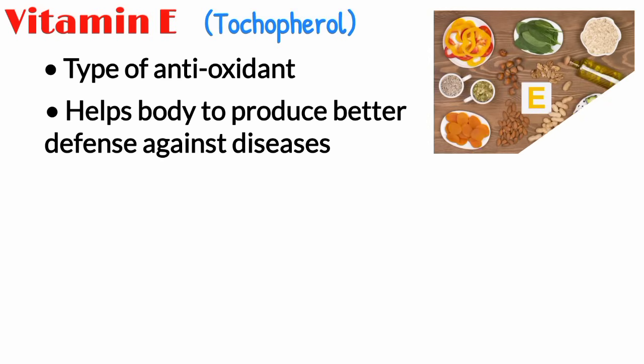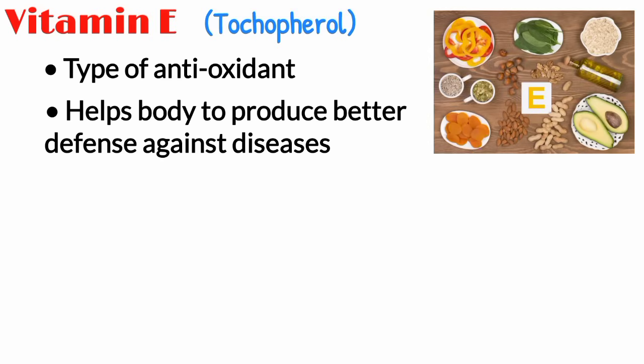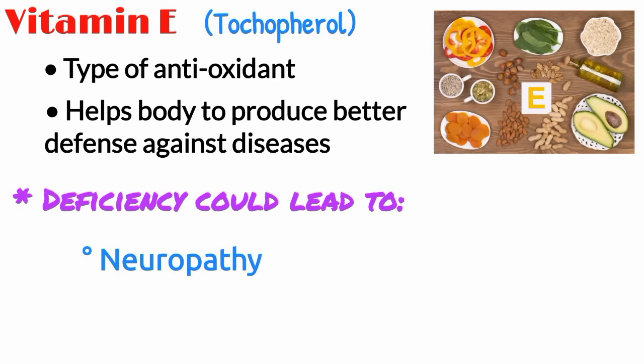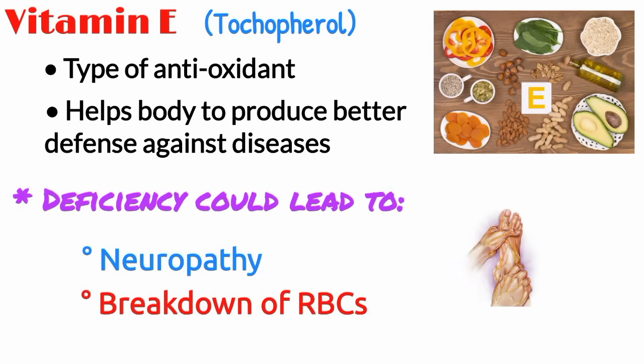It is found in wheat, margarine, nuts, oils, corn. Its deficiency could lead to neuropathy and breakdown of the red blood cells in the body.